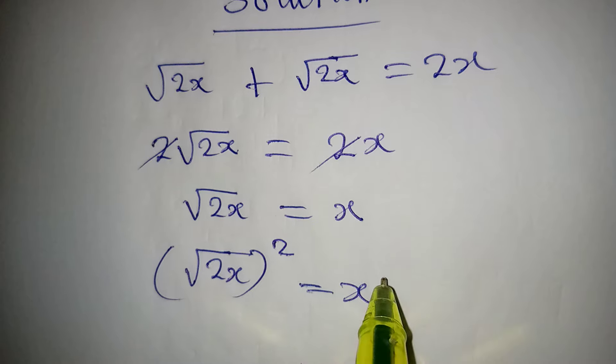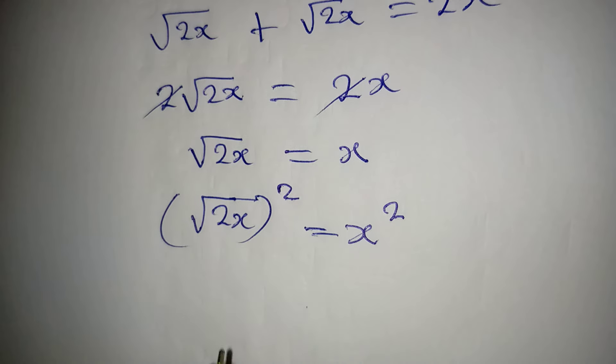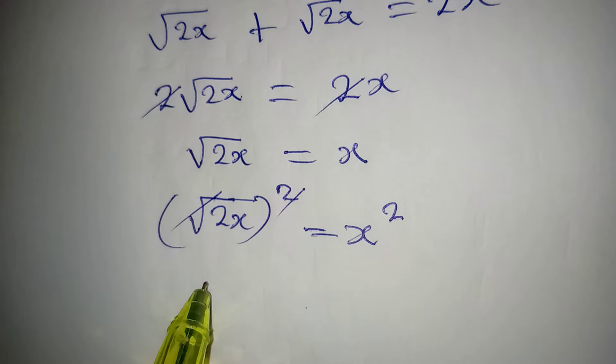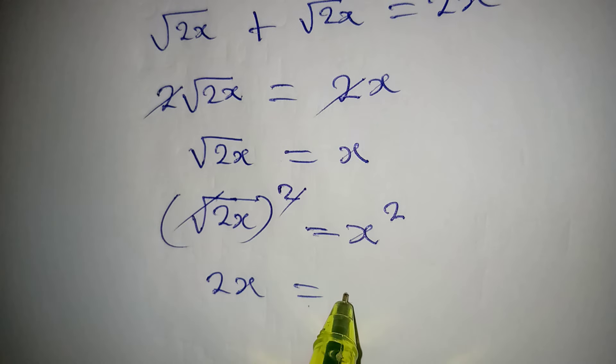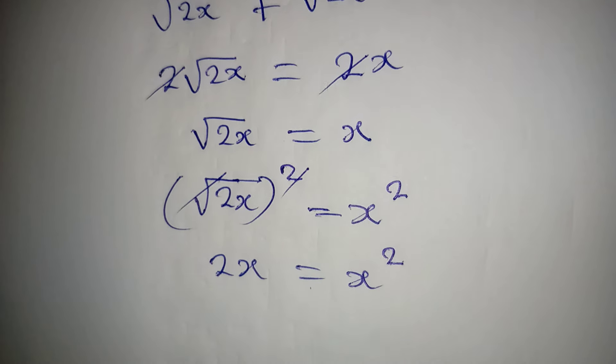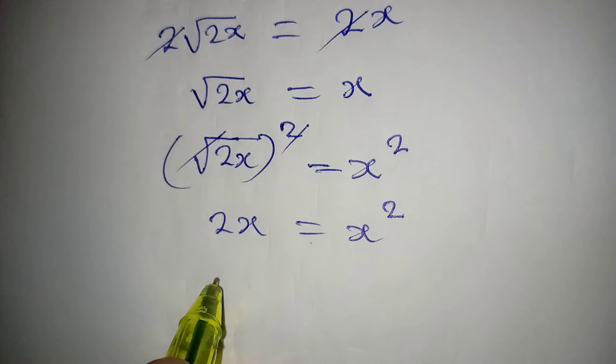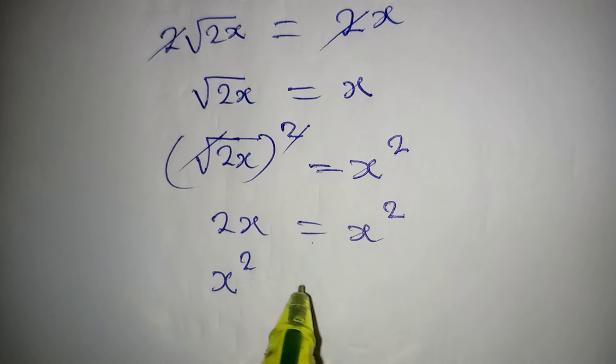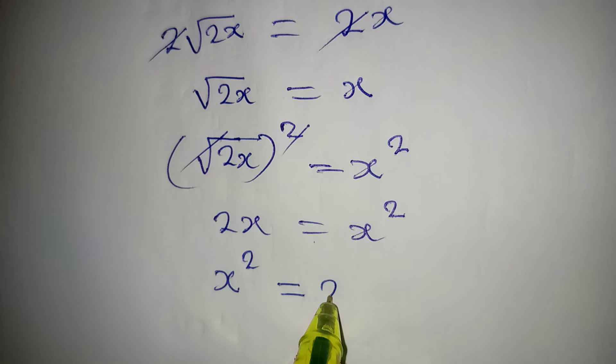This and this will be gone so that 2x will be equal to x squared. And then this is the same thing as x squared equal to 2x.